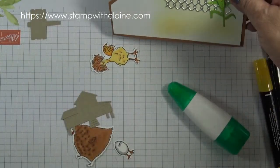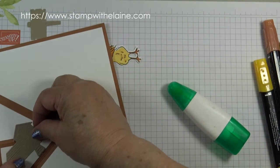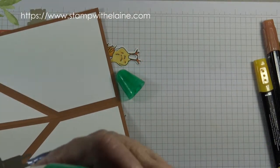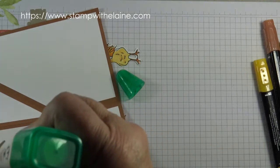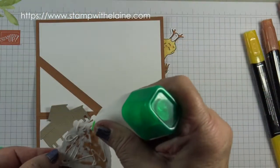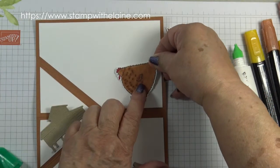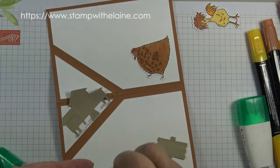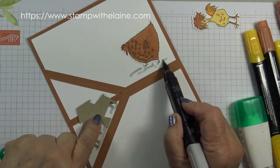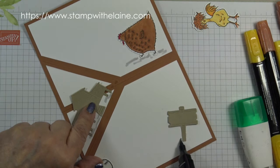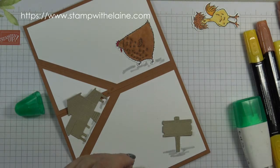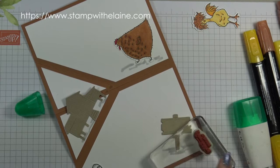So now we want to glue the house on and we want to make sure that it's not on the fold. So you only want to put glue on this side. Ground the chicken and the sign. Stamp the sentiment, have a happy day, with Tuxedo Black Memento ink.